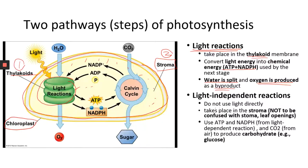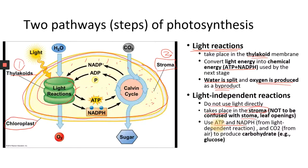The second step is not dependent on light, so it can happen anytime, and it takes place in the stroma — outside the thylakoid but still inside the chloroplast. Make sure you don't mix up stroma with stoma. Stoma are the openings on the underside of the leaf that take in carbon dioxide. Stroma is the space inside the chloroplast. The light-dependent reactions use ATP, NADPH, and carbon dioxide to make carbohydrates.